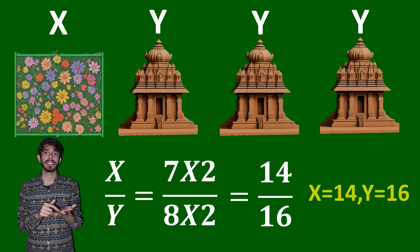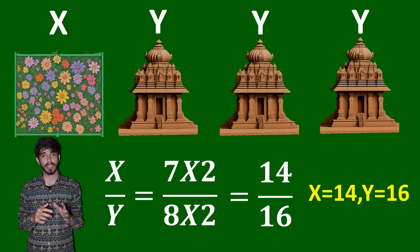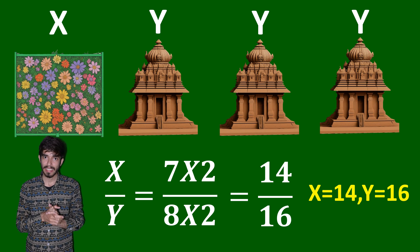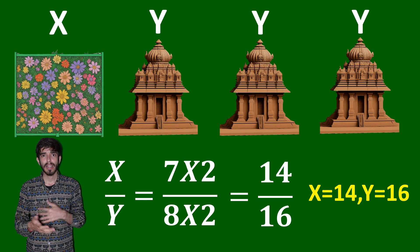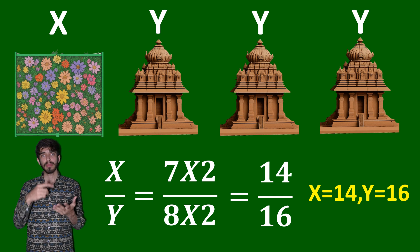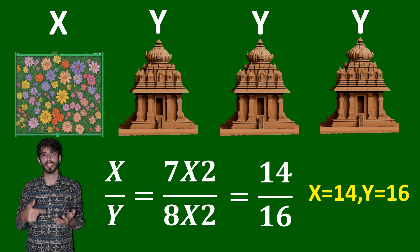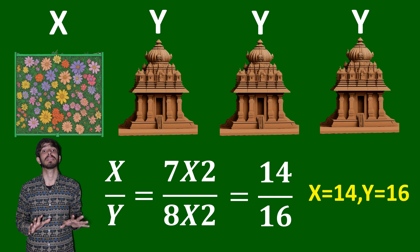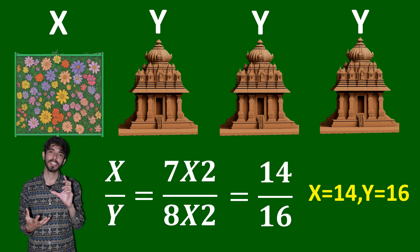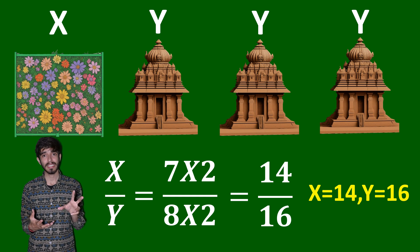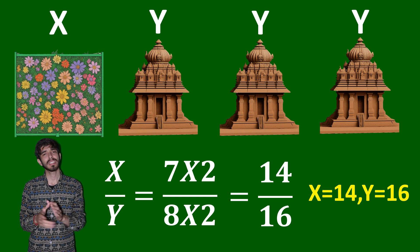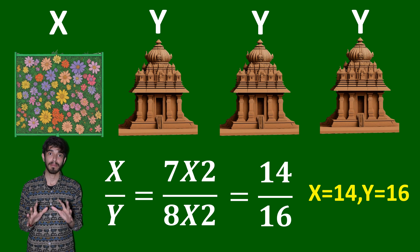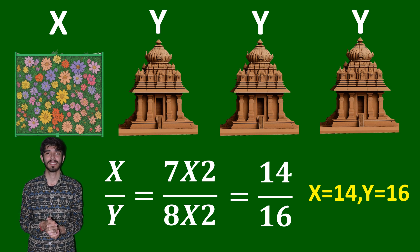If you multiply both numerator and denominator by 2, x becomes 14 and y becomes 16, which also works. Multiplying by any number gives infinitely many solutions. I hope you enjoyed this fun puzzle — thanks for watching, and always remember that math is everything!